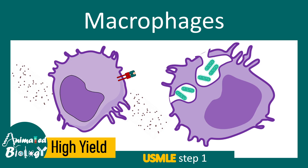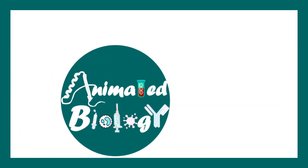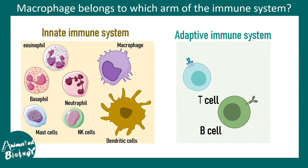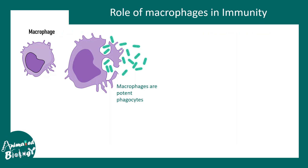In this video we'll be talking about macrophages. This is a high yield video for USMLE Step 1, so stay tuned till the end. Macrophages belong to the innate immune system. There are two arms of the immune system: the innate immune system and the adaptive immune system. Macrophages and dendritic cells are classical antigen presenting cells. Let's focus on the macrophage and try to understand its function at a cellular and molecular level.